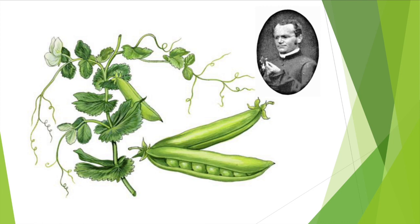In the mid-1800s, Gregor Mendel performed experiments on pea plants and discovered the fundamental laws of inheritance. Because of his experiments, we now refer to him as the father of genetics. For years, Mendel cross-pollinated pea plants and recorded his observations. Every day, he would look at his plants and record the colors of the flowers and pea pods, as well as the shapes of the peas, pods, and plants. As you might imagine, this process was very mundane and repetitive.